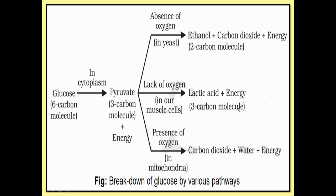Let's discuss lactic acid formation in muscle cells. When we do rigorous exercise, there will be cramps or pain in our muscles. Why does this happen? As we do rigorous exercise or gym training, our muscle cells need a lot of oxygen. But during very rigorous exercise, oxygen intake is quite less, so the muscles experience an absence of oxygen. Our body then uses anaerobic respiration to get energy, and this yields lactic acid. The continuous accumulation of lactic acid in the muscles leads to pain or cramps.